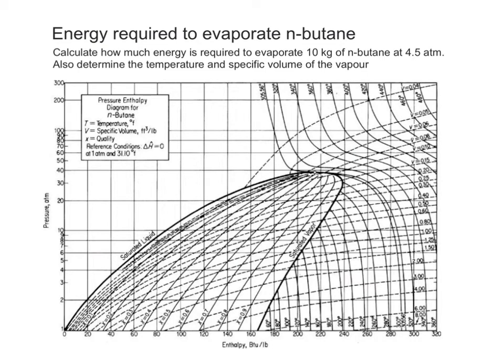It's relatively easy to calculate heats of evaporation using HP diagrams as we have here. In this example, we are asked to calculate how much energy is required to evaporate 10 kilograms of n-butane at 4.5 atmosphere, and we're given an enthalpy-pressure diagram to read that off of.